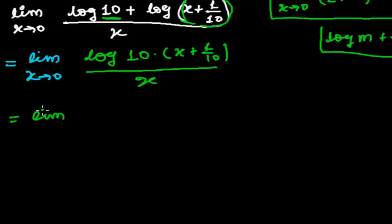Now again, limit x tends to 0. This x is here dividing, so I can write it as 1 upon x times log. 10 will multiply this, it will be 10x plus 10 times 1/10, that is 1.